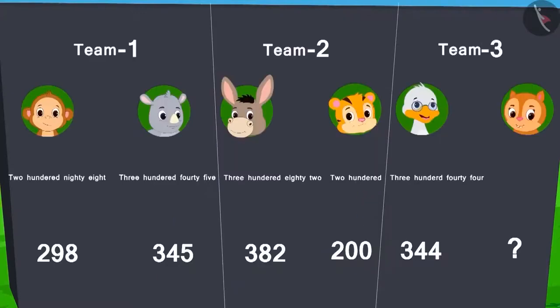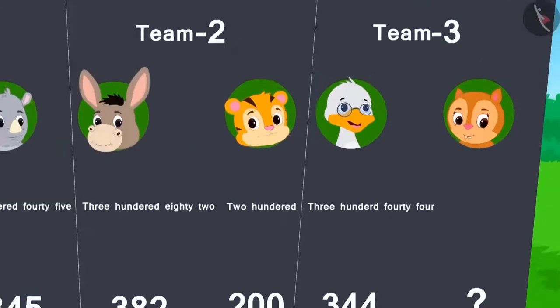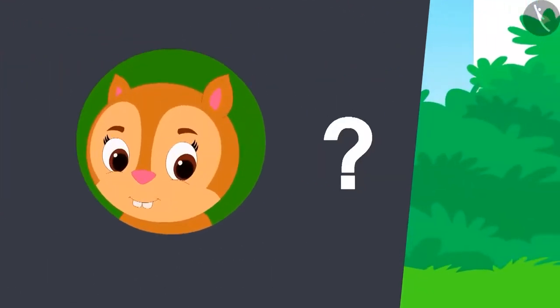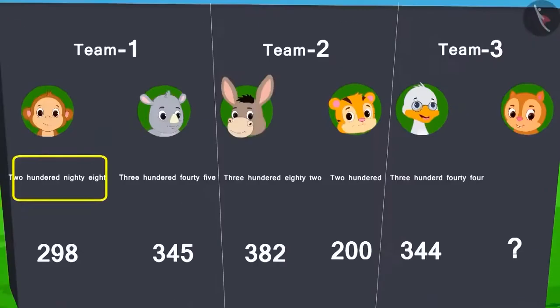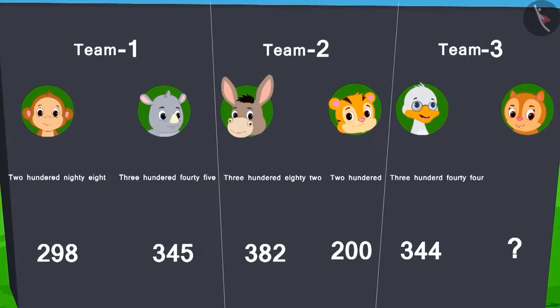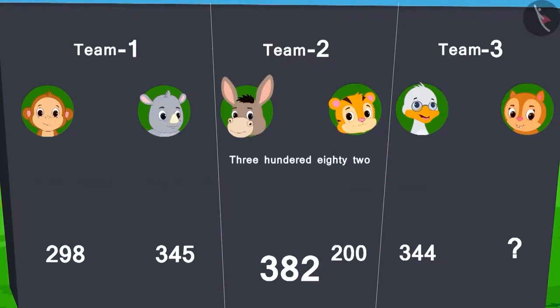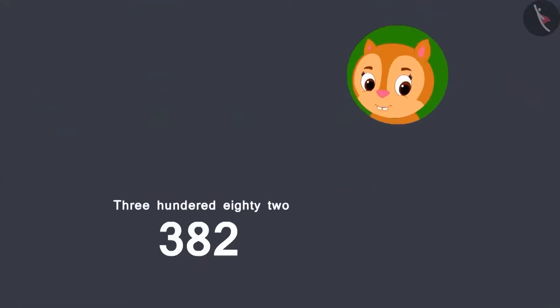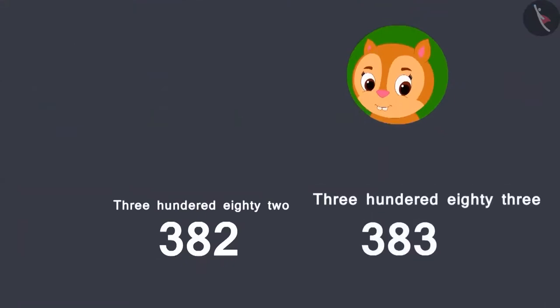In order to win, how many balloons would Chanda need to burst? The biggest number so far is 382. That's why, in order to win, Chanda would need to burst at least 383 balloons.